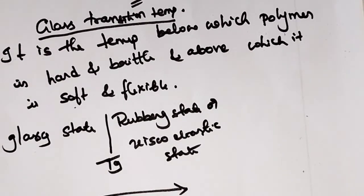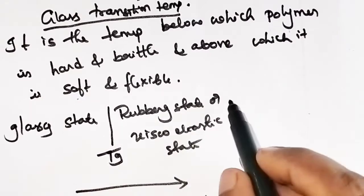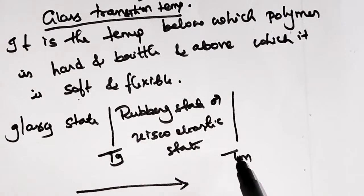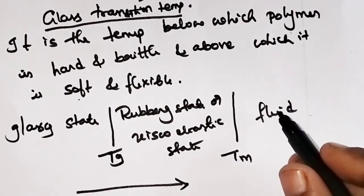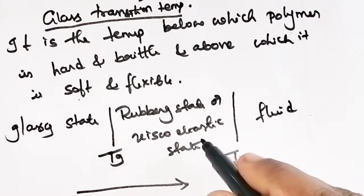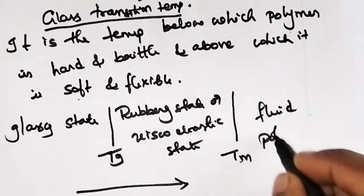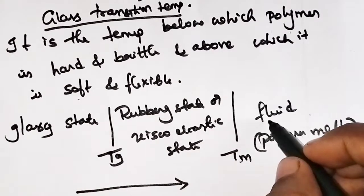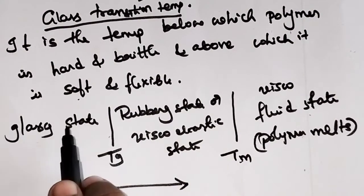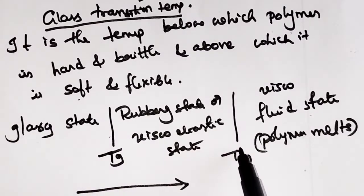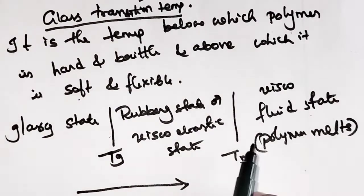If you further heat the polymer, at one particular temperature called Tm — the melting temperature — the polymer becomes a fluid. Below Tm the polymer is in the rubbery or elastic state, while above Tm the polymer melts and we call that the viscous fluid state. So Tg marks the glassy-to-rubbery transition, and Tm marks the melting point.